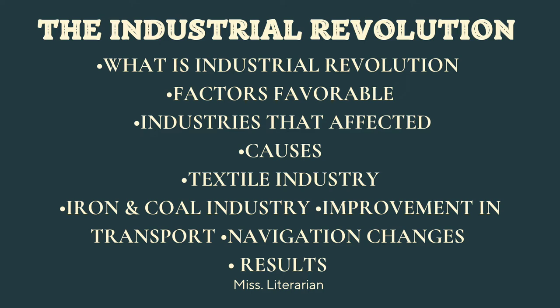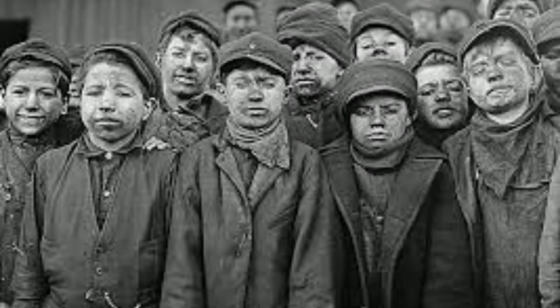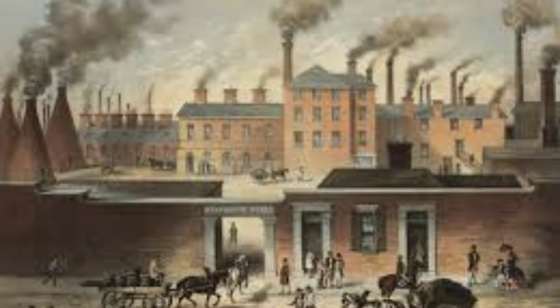Lastly, the results of industrial revolution. The industries in Britain underwent great changes during the second half of the 18th century and the first half of the 19th century. The term industrial revolution is applied because before it, goods were produced in limited quantities by human hands in the houses of workers, but after the revolution, goods were produced in large quantities by machines in factories, creating a drastic change in the industrial methods of England.